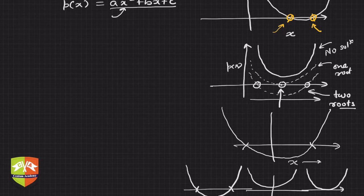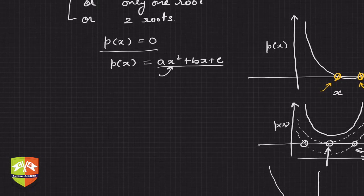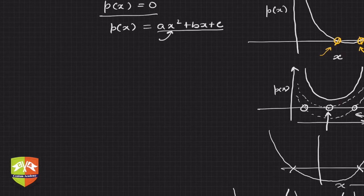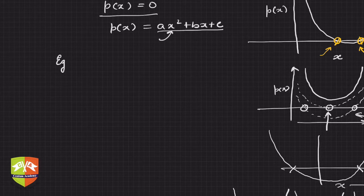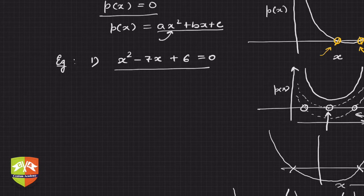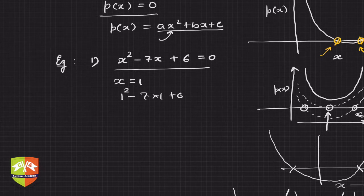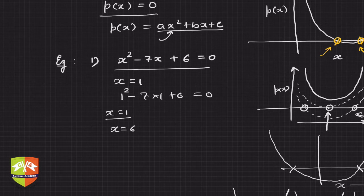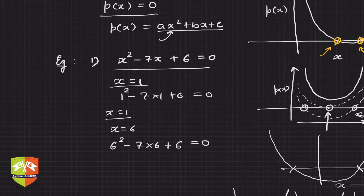Let's take a few examples. Example one: x² - 7x + 6 = 0. If you put x = 1, you get 1 - 7(1) + 6 = 0, so x = 1 is clearly a solution. If you put x = 6, you get 6² - 7(6) + 6 = 36 - 42 + 6 = 0, so x = 6 is also a solution. Hence the two roots are x = 1 and x = 6.